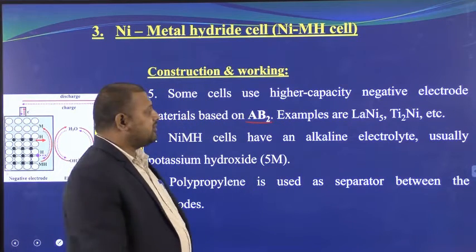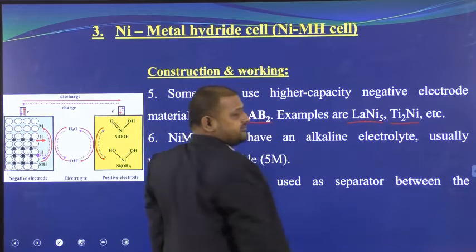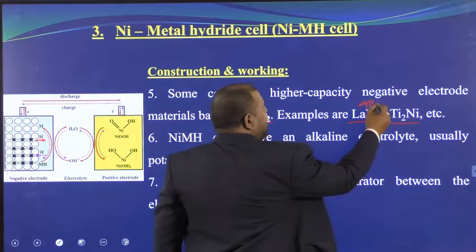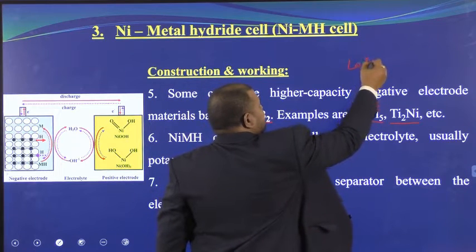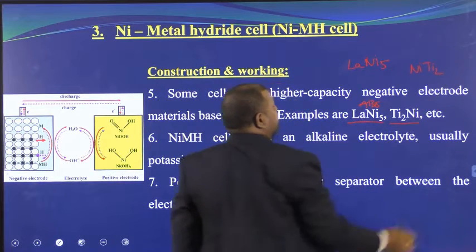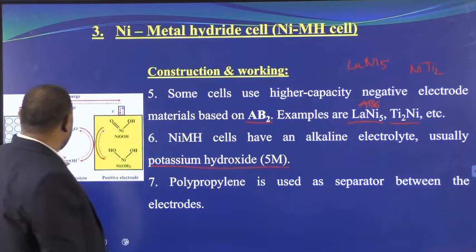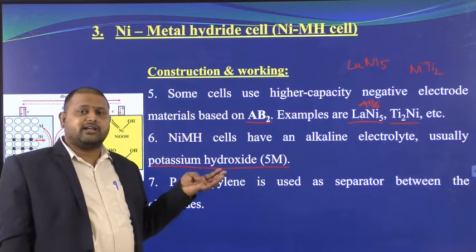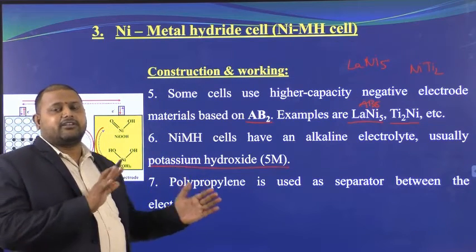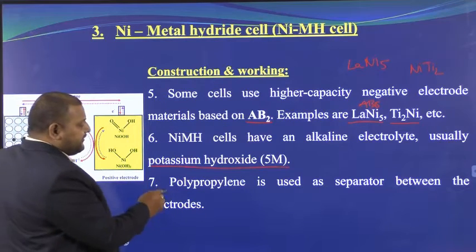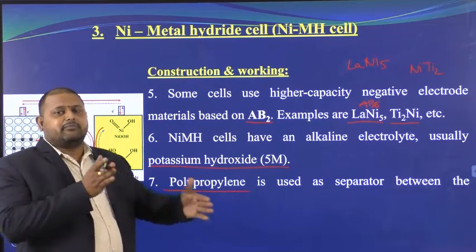The alloy can be AB₅ type — example: lanthanum nickelate (LaNi₅) — or AB₂ type — example: titanium nickelate (TiNi₂). In AB₅, A is lanthanum and B is nickel (five of them); in AB₂, A is nickel and B is titanium (twice). The electrolyte is potassium hydroxide (KOH), typically 5M alkaline solution — this is common to both nickel cadmium and nickel metal hydride batteries. The separator used is a polypropylene separator.